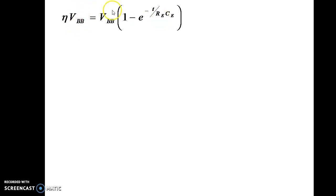Now VBB cancels and the expression changes. We can rearrange by bringing 1 to the left hand side. So 1 minus eta equal to e power minus T by REC.